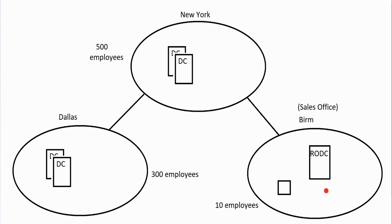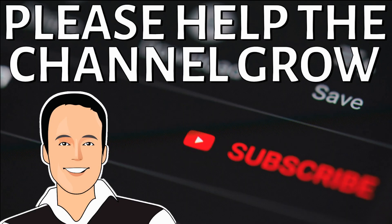Essentially, the RODC only knows about the ten employees that work in the office. That's the idea of RODC and how it can benefit us. It's not used super often in the real world, but it's handy in certain circumstances. You can also put DNS on it, so employees can query DNS right there at the RODC as well. Remember, RODC is read-only and used only in specific circumstances.